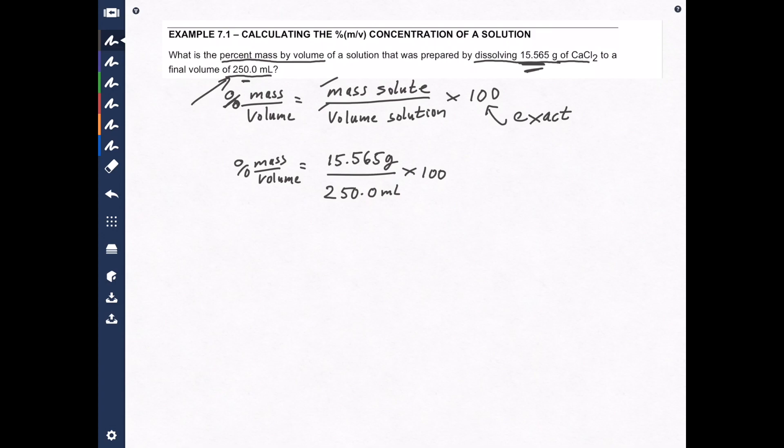I'm going to take 15.565, divide it by 250.0 equals, and then multiply by 100. The answer I get on my phone is 6.226% M over V.